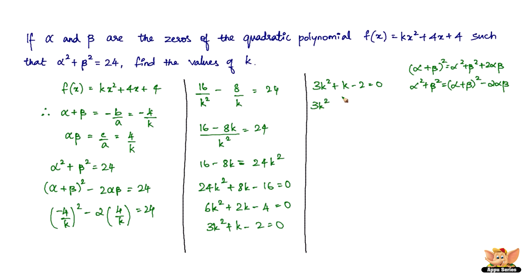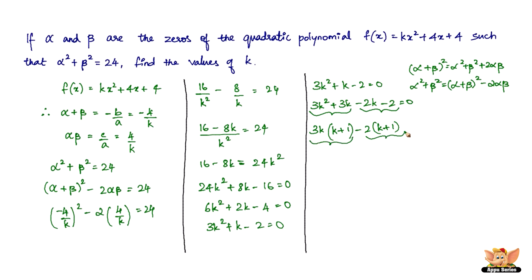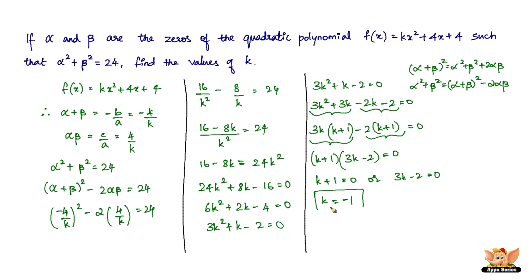For 3k² + k - 2 = 0, we need to factorize: 3 × (-2) = -6, and we need factors of -6 that add to +1, which are +3 and -2. So: 3k² + 3k - 2k - 2 = 0. Grouping: 3k(k + 1) - 2(k + 1) = 0, giving (3k - 2)(k + 1) = 0. Therefore k = -1 or k = 2/3.